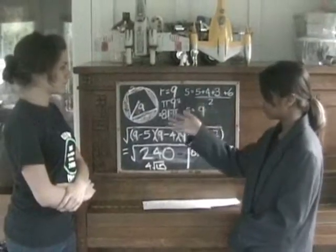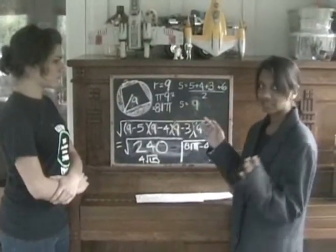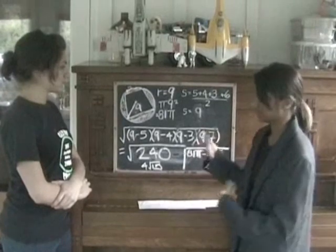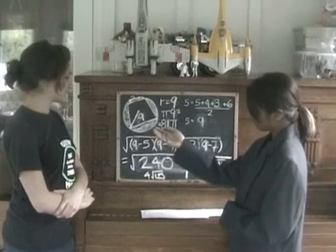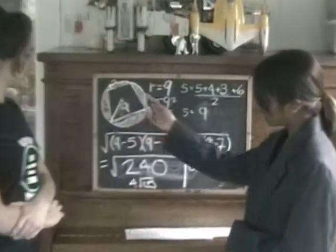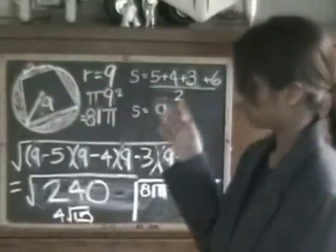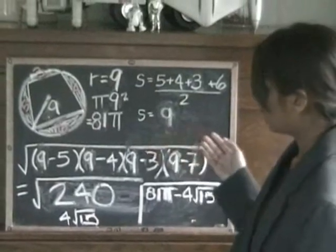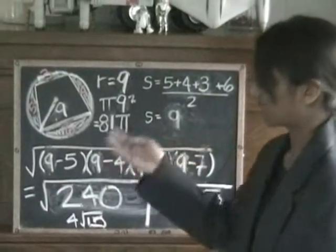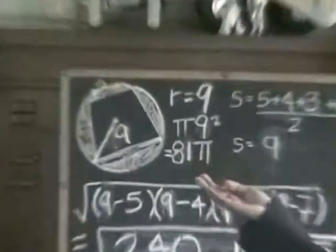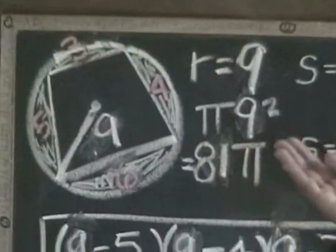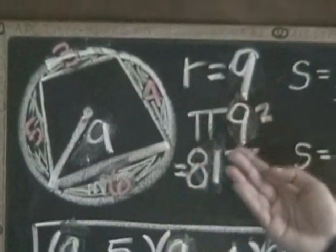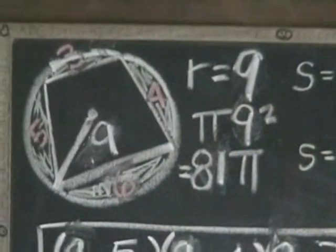Now, we will do a slightly harder problem using my formula. We are going to find the shaded area of the circle. First, let's find the area of the circle, which would be pi r squared. The radius is 9, so it's 81 pi.